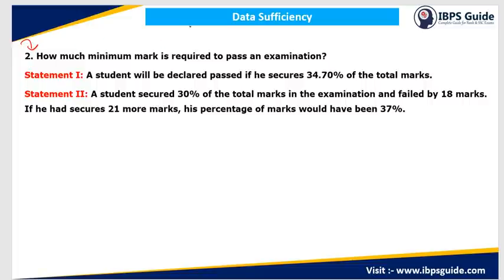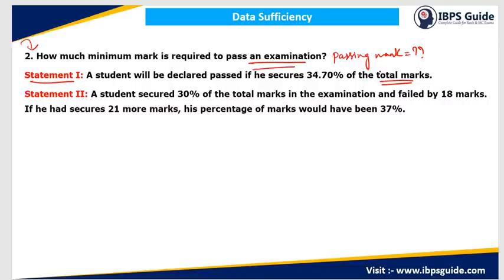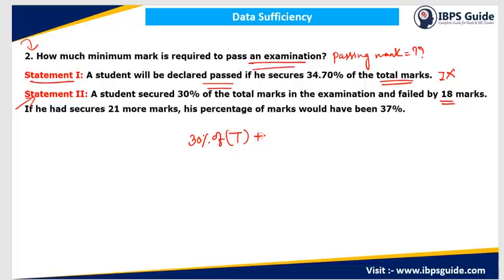Question 2: how many minimum marks are required to pass an examination? Statement 1 says a student will be declared passed if he secures 34.7% of the total marks. However, since the total marks are not given and we cannot assume the total is 100, we cannot find the passing marks from statement 1 alone. Statement 1 is not sufficient. Statement 2 says a student scored 30% of the total marks and failed by 18 marks, so passing marks would be 30% of T plus 18.